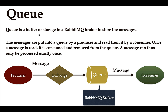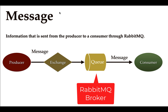A queue is basically a buffer or storage in the RabbitMQ broker to store messages. Whenever a producer sends a message to the broker, that message is first stored in a queue, and then the consumer reads it from the queue. We can create any number of queues in a RabbitMQ broker.